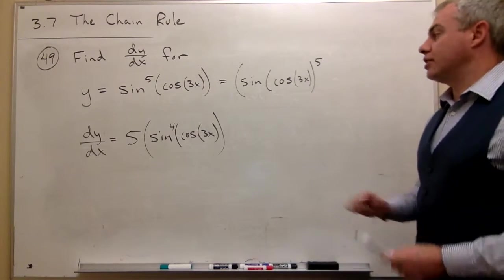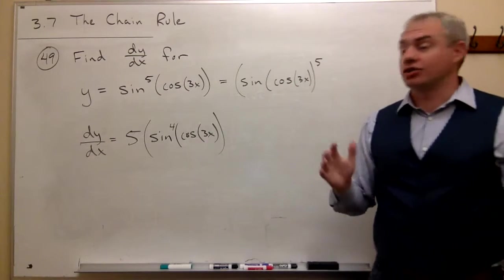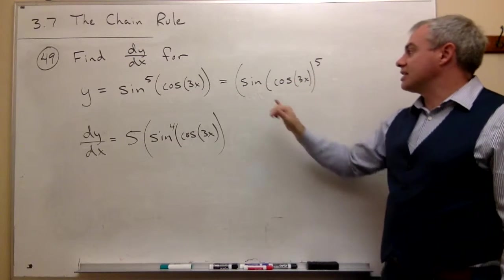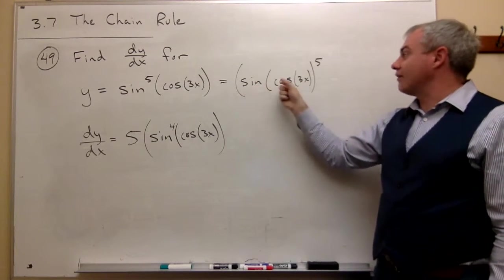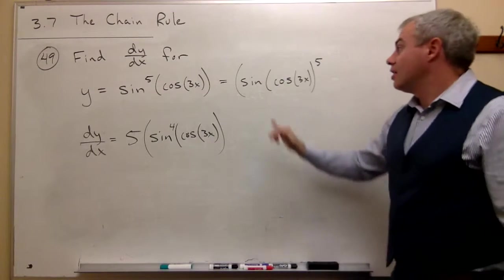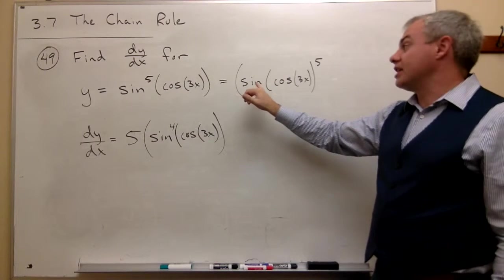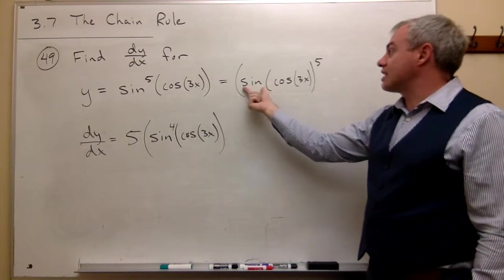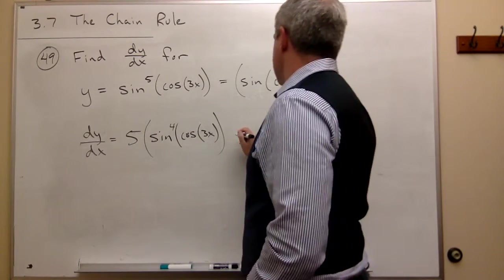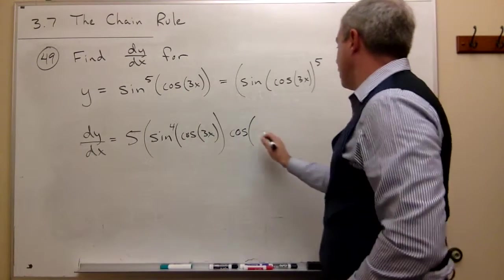Now we have to ask: we took the derivative of the outside function, and now we have to multiply by the derivative of the inside. In this case, the inside was sine of cosine of 3x. So we have to multiply by the derivative of sine of cosine of 3x. The outermost function here is sine, and the derivative of sine of something is cosine of something — the something in this case being cosine of 3x.